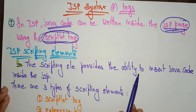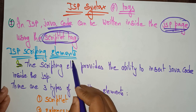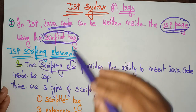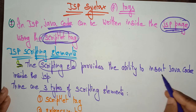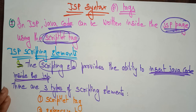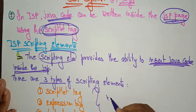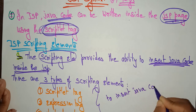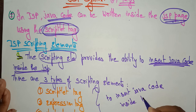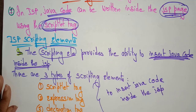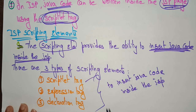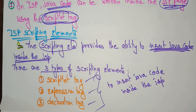The scripting elements provide the ability to insert Java code inside JSP. In JSP, there are three types of scripting elements, and all three provide the ability to insert Java code inside JSP files. The three types are: scriptlet tags, expression tags, and declaration tags. With the help of these three tags, you can insert Java code inside JSP files.